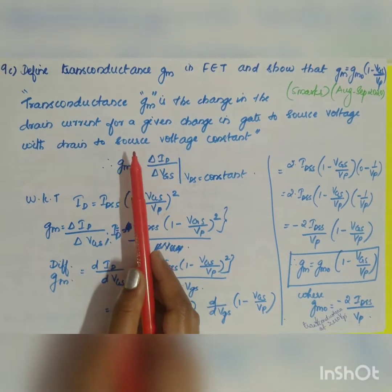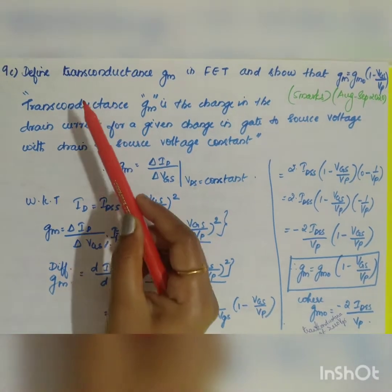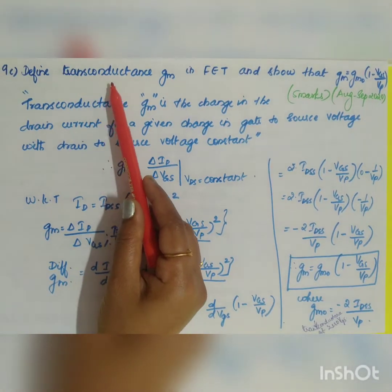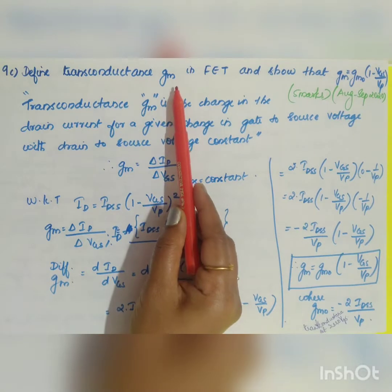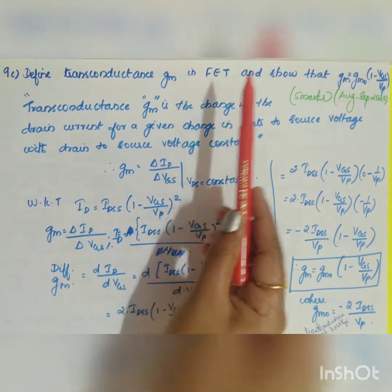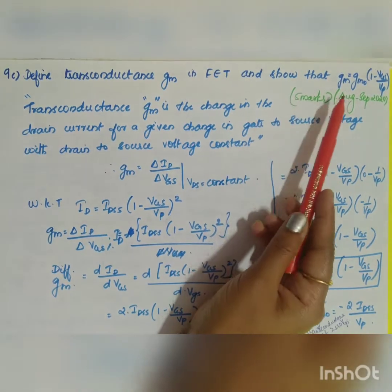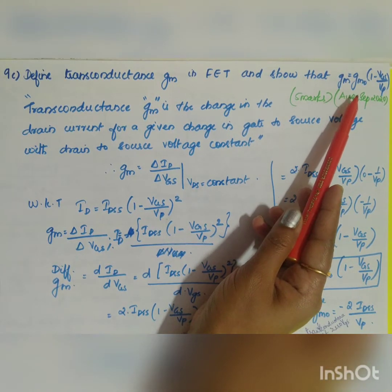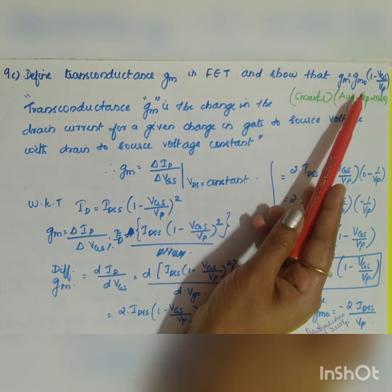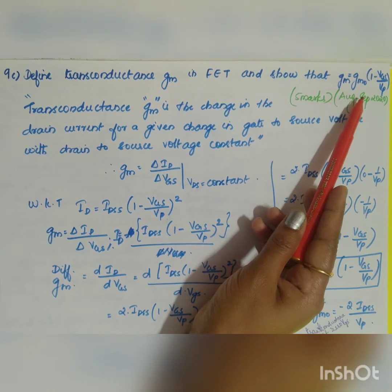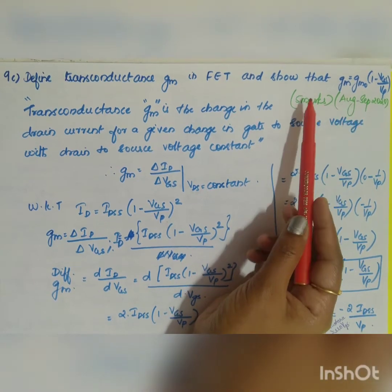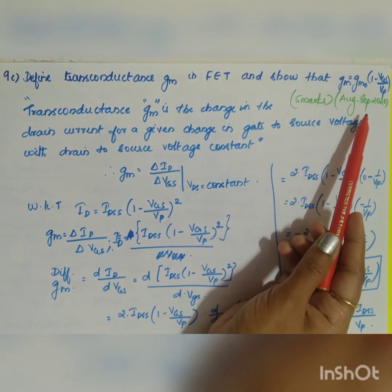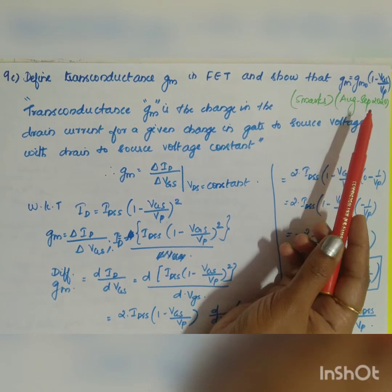The next question is question 9, part C: define transconductance gm in FET and show that gm is equal to gm0 into 1 minus vgs divided by vp. It is asked for 5 marks, from August/September 2020.